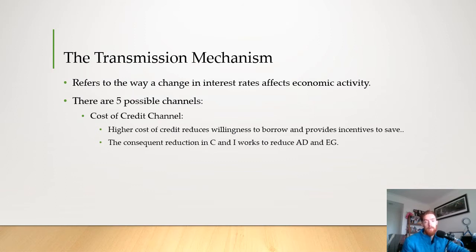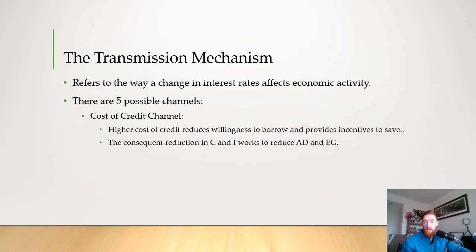The first one is the cost of credit channel. A higher cost of credit reduces willingness to borrow and provides an incentive to save. When the cash rate is increased, people have more incentive to save because interest rates are higher. You're either punished for borrowing because you pay back a higher rate, or rewarded for saving with higher interest returns. This leads to a reduction in private consumption spending and investment spending, which works to reduce aggregate demand and economic growth.